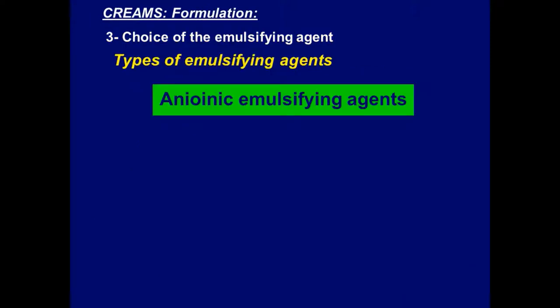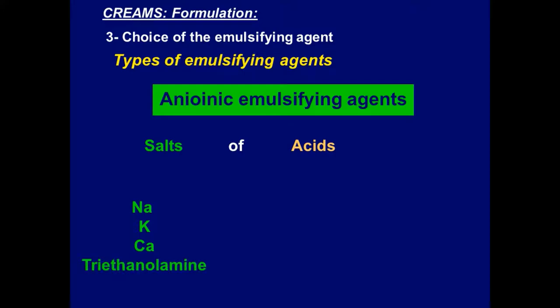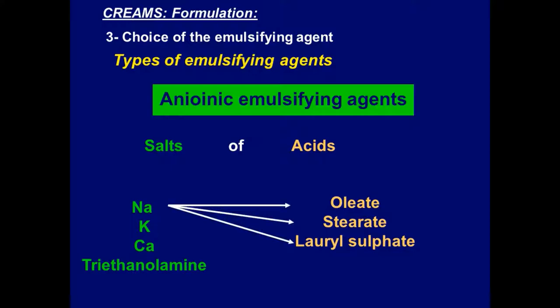Anionic emulsifying agents can be confusing. Remember that these are salts of acids — salts of sodium and potassium (monovalent), calcium (divalent), and triethanolamine (organic salts). The acid part of an anionic emulsifier may be oleate, stearate, or lauryl sulfate. So you have sodium oleate, sodium stearate, and sodium lauryl sulfate — all of them are anionic emulsifying agents.